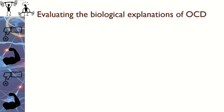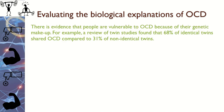Evaluating the biological explanation: if we're talking about genes, we're always going to look at twin studies. There's evidence to show that if one identical twin has OCD, there's a 68% chance that the other twin will also have OCD. This is a really high concordance rate, showing a massive implication on the biological side — nature is having a major impact on whether or not you develop OCD.